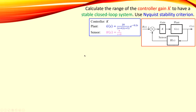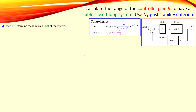As we did in the previous example, we first determine the loop gain L(s) of the system. The loop transfer function is easily determined by making a first circle — you start at one point and come back to the same point. In this case, L(s) will be K times G times H, as shown here. Substituting the given values, we have the following expression.